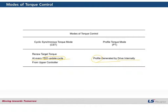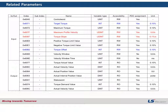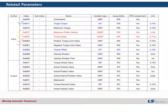The related parameters with torque control are like this. These two parameters are only for profile torque mode. The positive torque limit value and the negative torque limit value — this torque limit function allows the user to set different values between forward operation and backward operation. We can use this function for some kinds of tension machines. Today I'd like to show you one example that uses the target torque and the torque offset.